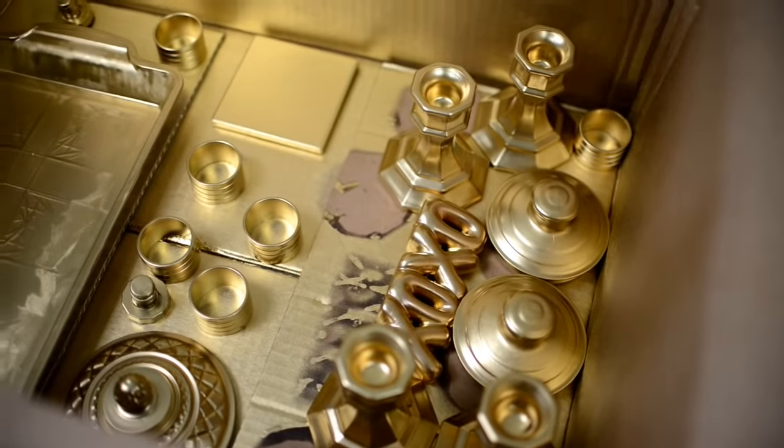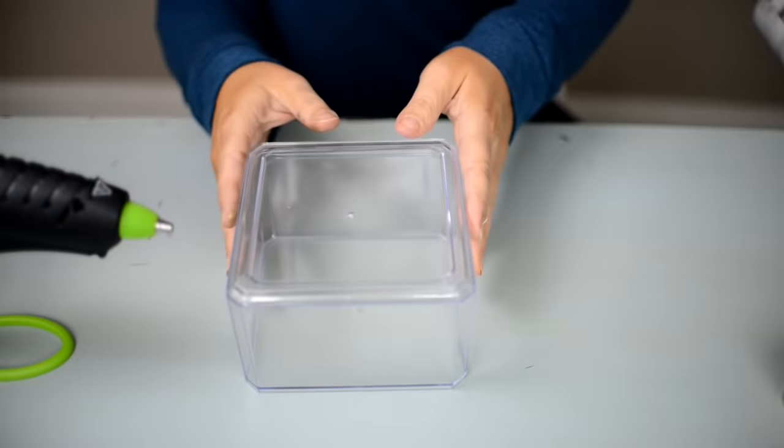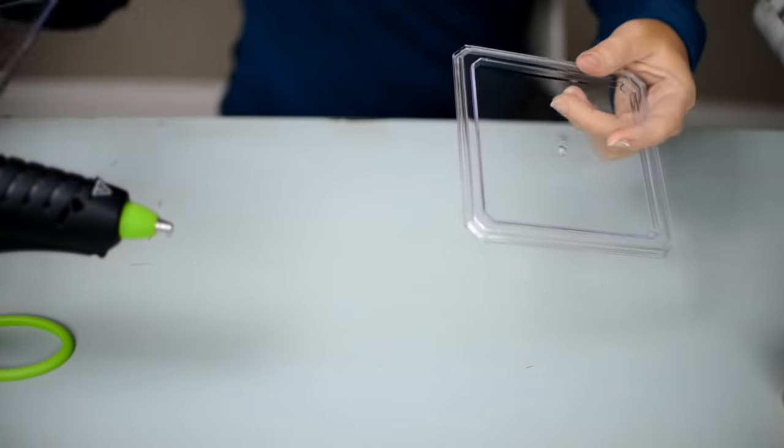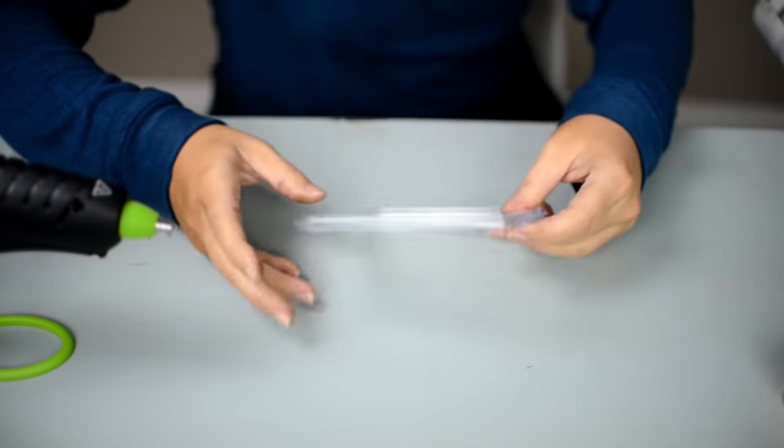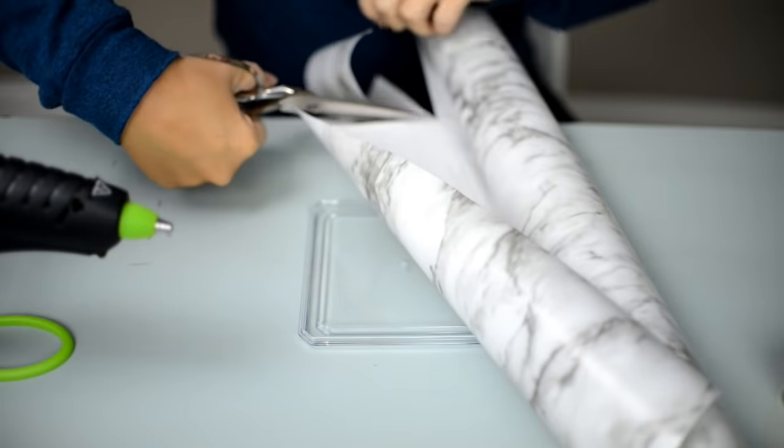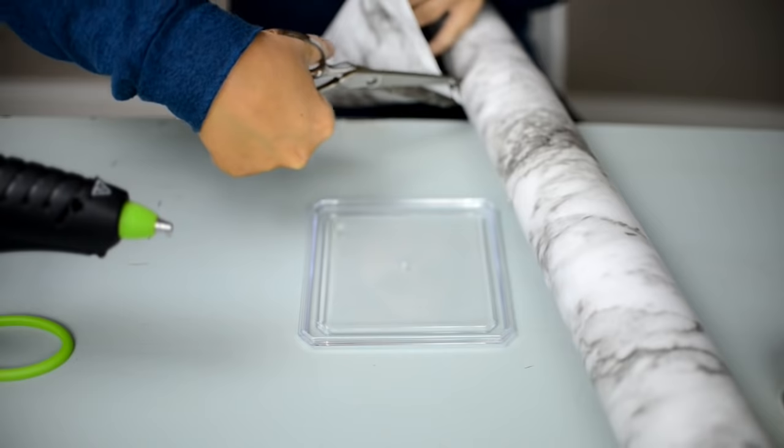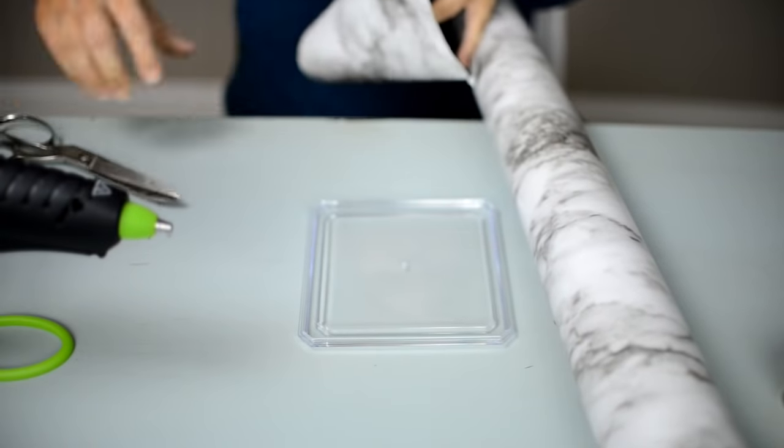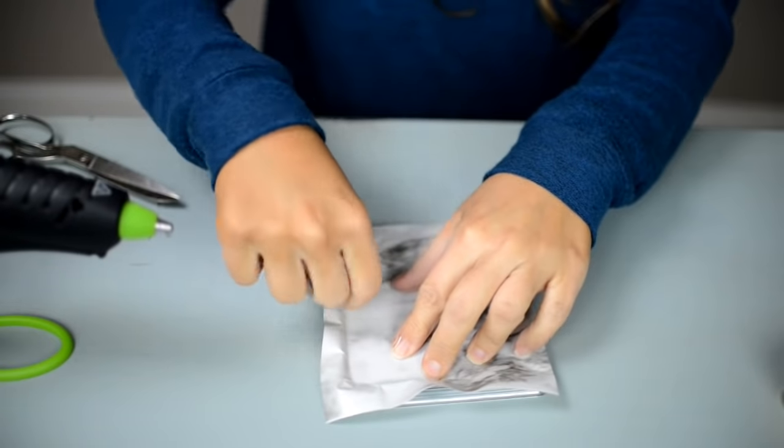Then I'm going to spray paint the top gold. I'm also going to spray paint the little napkin rings. First, I'm going to put some marble paper on the lid. This paper you can pick up at Walmart, the only thing not from Dollar Tree. All you're going to do is take off a little section and use your fingernail.